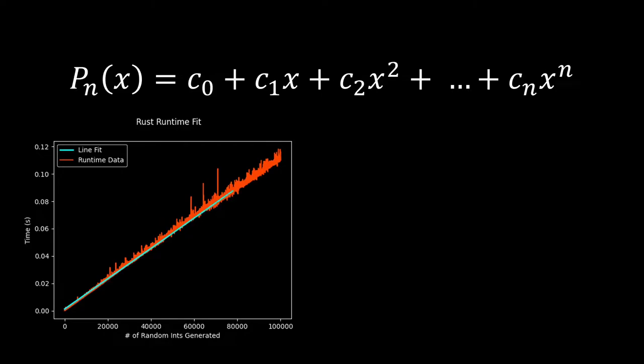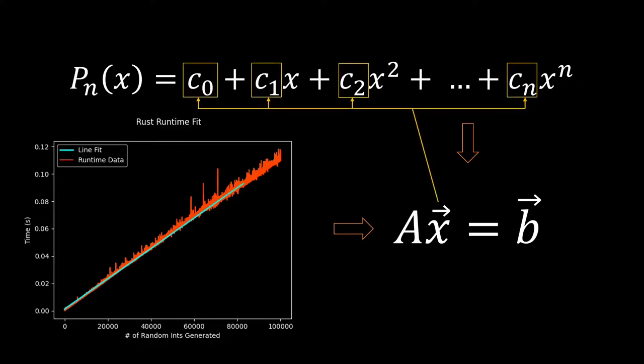The procedure is not changing really at all from the line fit. We're going to take our polynomial model, take our observable data, construct a linear system, and find a least squares solution to this linear system, which is going to give us the coefficients of our model, which then we can plug back into our model.